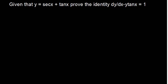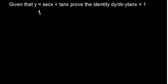How can we solve this question? The question says: given that y is equal to sec x plus tan x, prove the identity dy/dx minus y·tan x is equal to 1. So we need to prove that this expression dy/dx minus y·tan x has to be equal to 1.